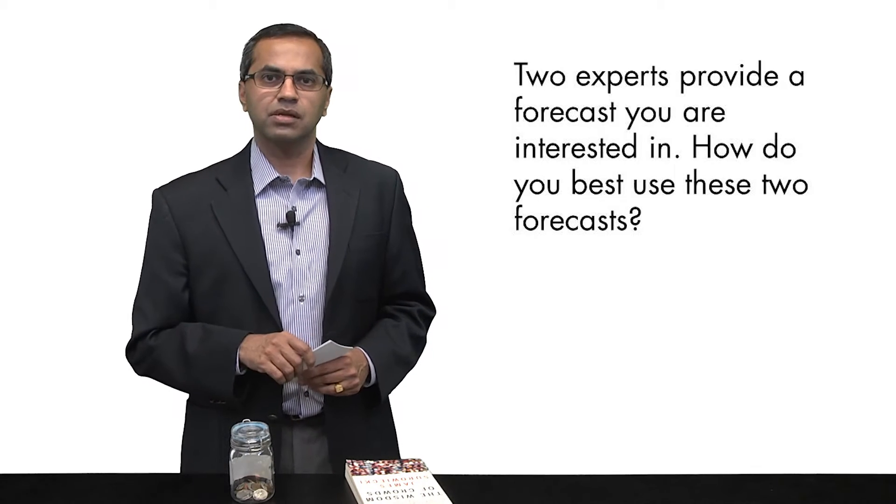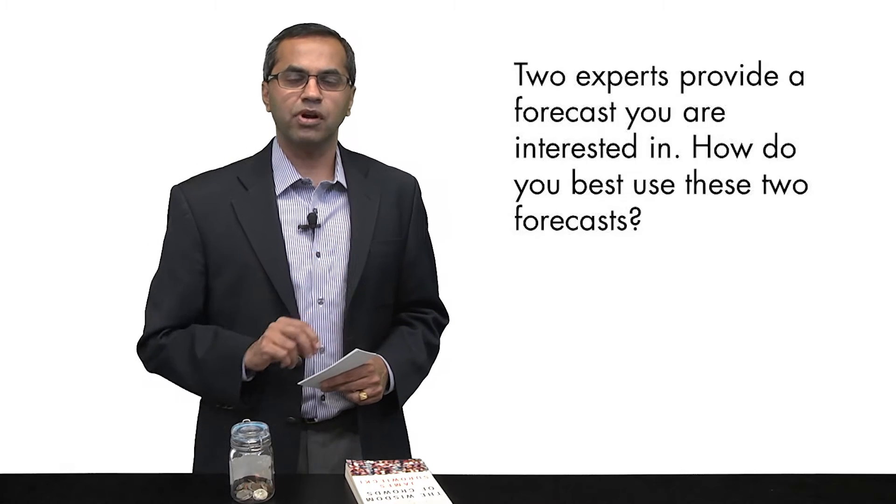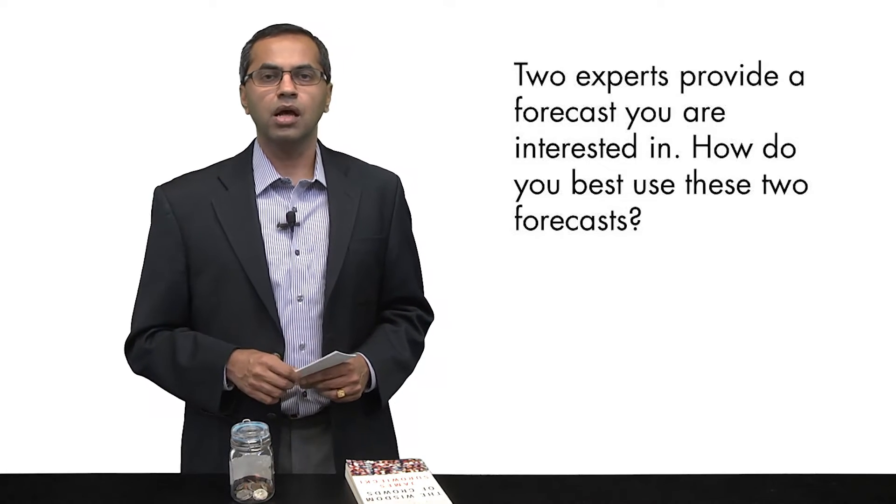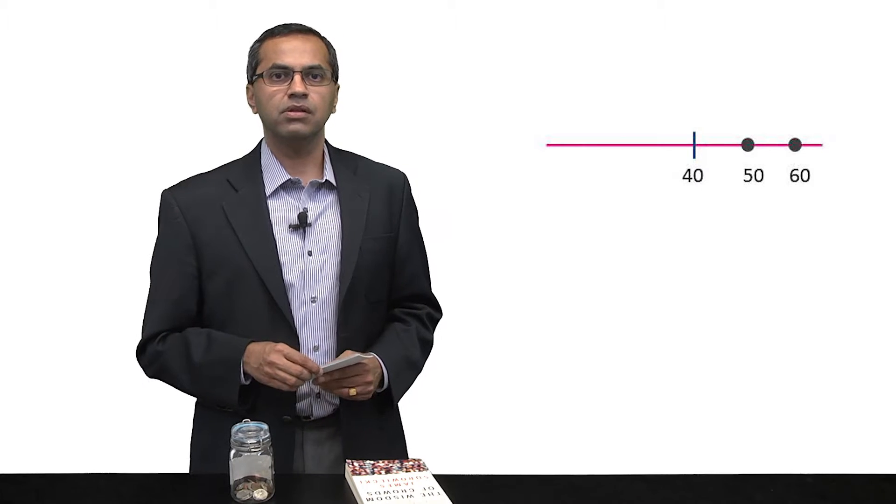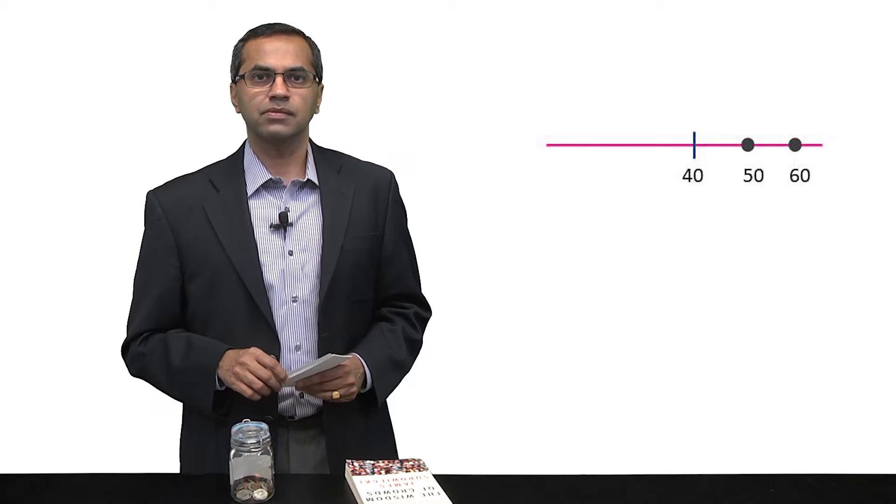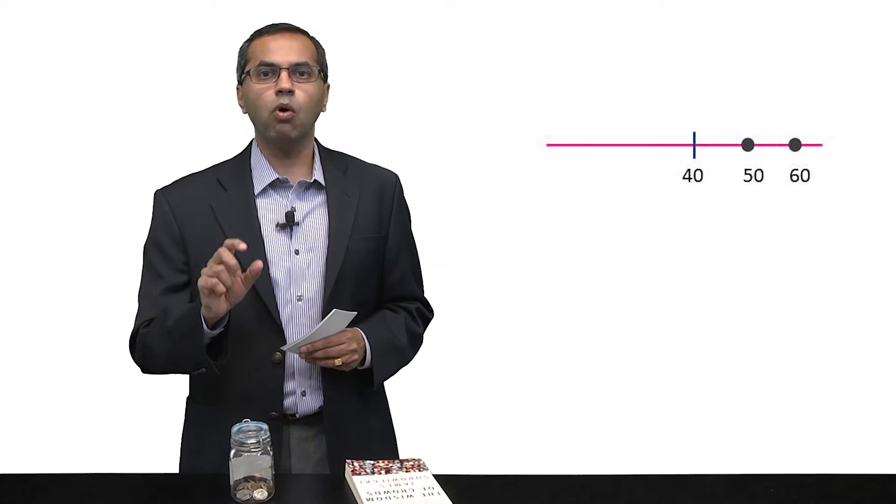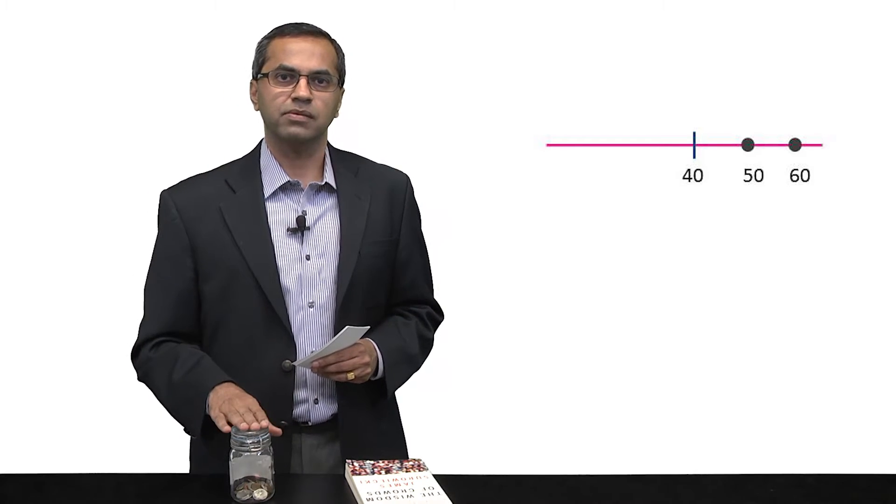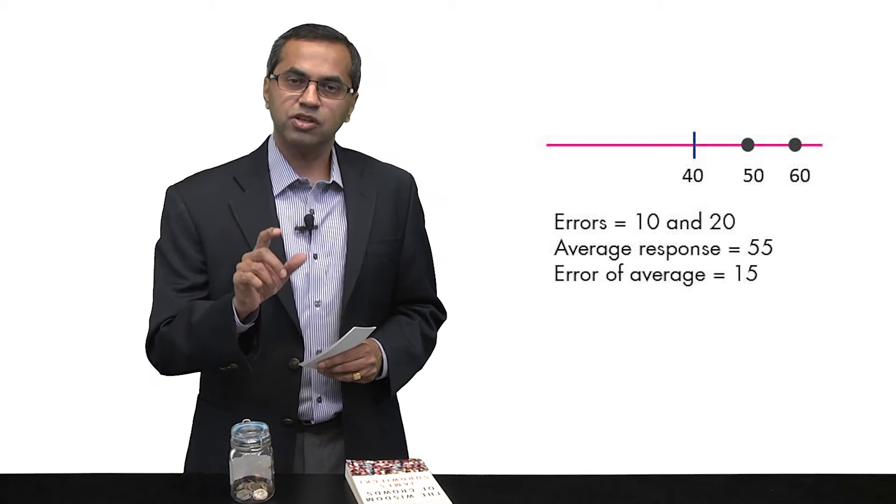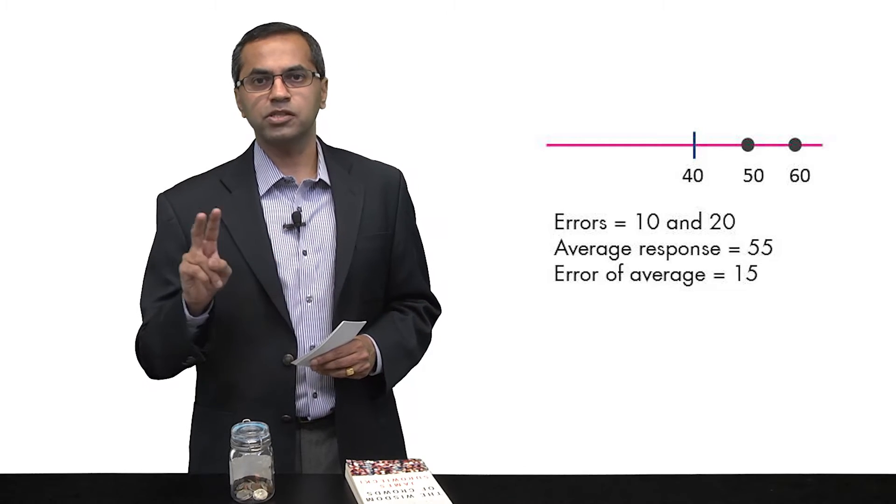So let's go back to the jars. Let's say you ask two people for how many coins they think are in this jar. One of them says 50, the other one says 60. What's happened here is both of these judges have over-predicted because we now know that the correct answer is 40. One of the judges is off by 10 coins. The other one is off by 20.